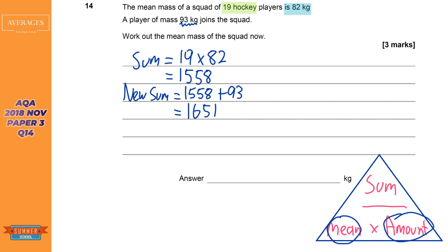So we're going to do 1558 plus 93 because we've now got this 93 in our hockey squad and we get 1651 fantastic. So now we've got the new sum. It says work out the mean mass of the squad now. So to work out the mean as we know from our triangle at the bottom it's the sum divided by the amount of players. Be careful here I reckon it's probably pretty tempting to write 19 in there but we have had another player join the squad so it's now 20.